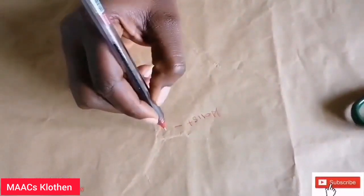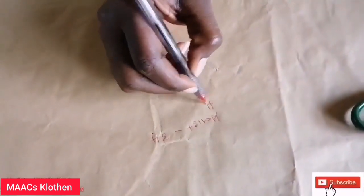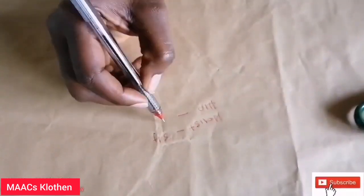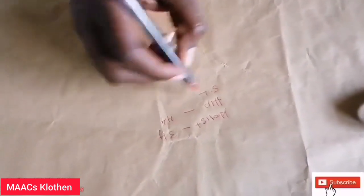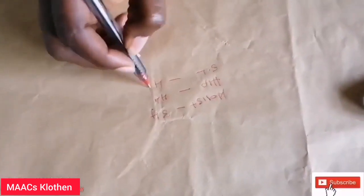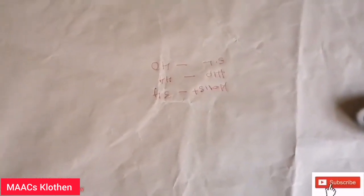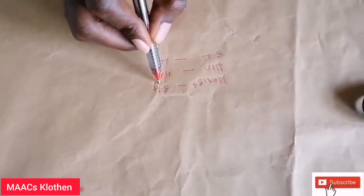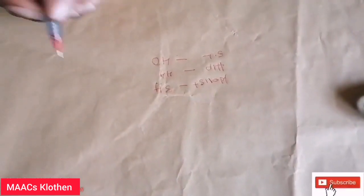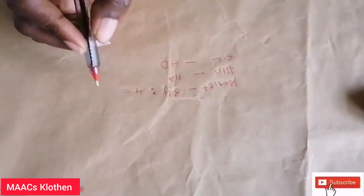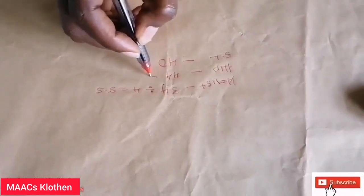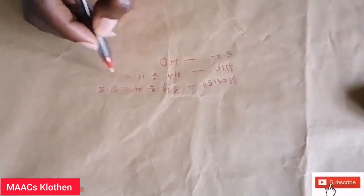I'm using a waist of 34, hip measurement of 44, and skirt length of 40 — since the paper length is 40. Because it's a four-piece pattern, we divide the waist by four: 34 ÷ 4 = 8.5. We divide the hip by four as well: 44 ÷ 4 = 11.